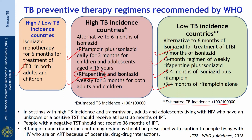In settings with high TB incidence and transmission, adults and adolescents living with HIV who have an unknown or positive tuberculin skin test should receive at least 36 months of isoniazid preventive therapy based on previously published studies. People with a negative TST should not receive 36 months of isoniazid preventive therapy. It is important to note that rifampicin and rifampicin-containing regimens should be prescribed with caution to people living with HIV who are on ART, because of potential drug-drug interactions.